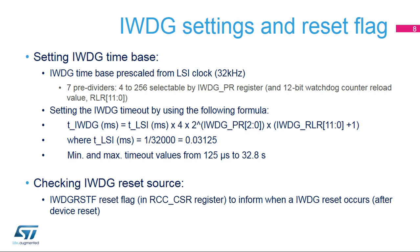The IWDG timebase is pre-scaled from the LSI clock at 32 kHz. The IWDG PR pre-scaler register can divide the LSI clock frequency by 4 up to 256. The watchdog counter reload value is a 12-bit value written in the IWDG RLR register. A formula can be used to determine the IWDG timeout, based on the LSI period, its pre-scaler, and the selected watchdog counter reload value.